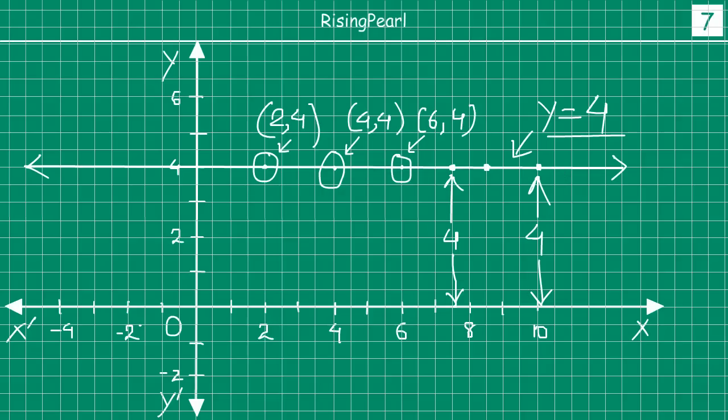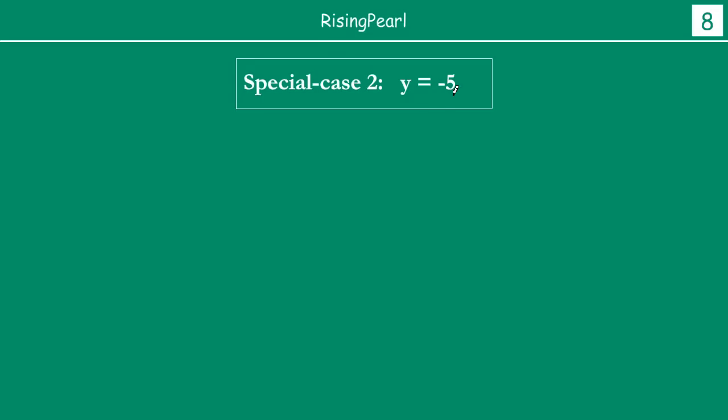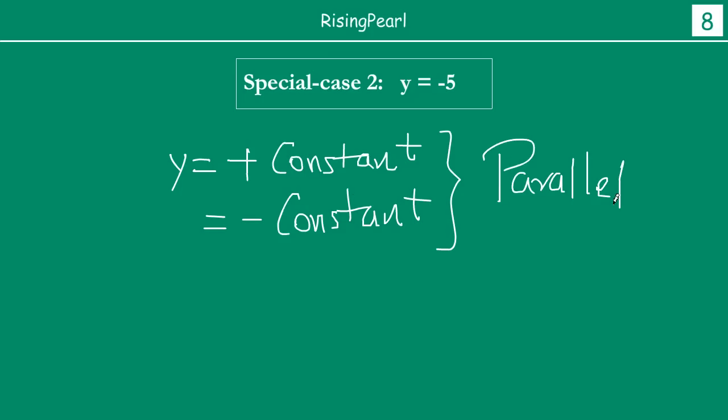Now let's do one thing friends. How about if you have y equal to minus 5? So we want you to actually try this out by yourself. And notice whether y is equal to plus something, y is equal to plus some constant, or if you have y is equal to minus some constant. For both these cases, you will get a graph which is parallel to x axis.